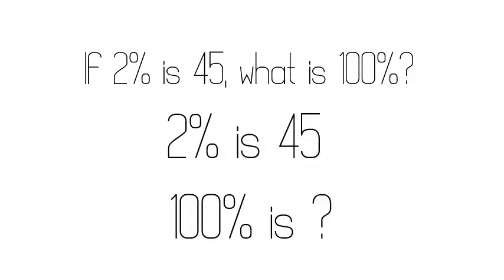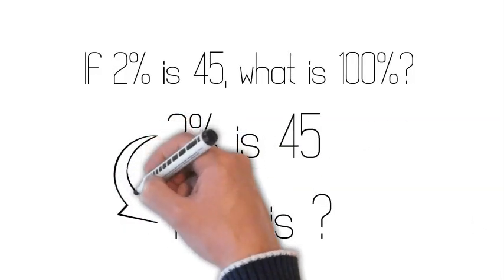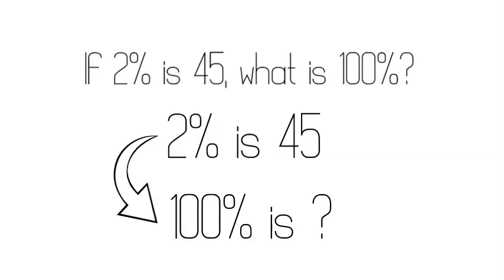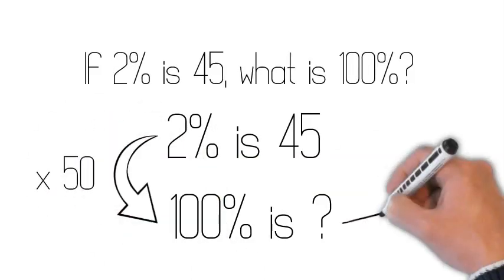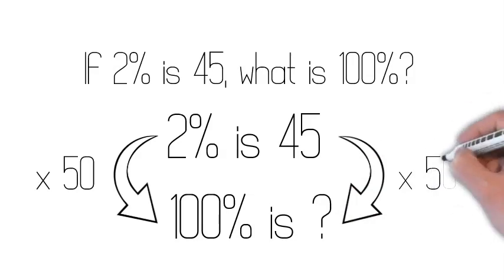We don't know. How do we get from 2% to 100%? We times by 50. Whatever we do to one side, we have to do to the other.